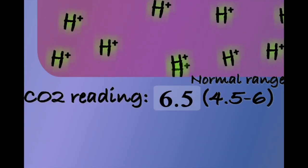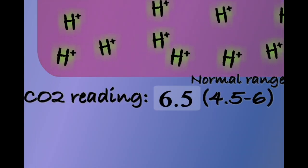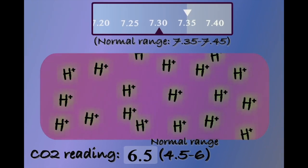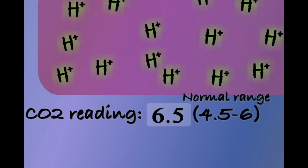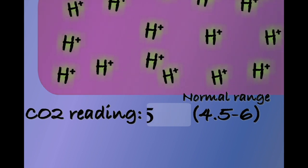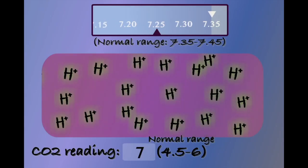CO2 greater than 6 kilopascals has the potential to push the pH of the blood below its optimum range. At this point, we will describe the ABG as representing a respiratory acidosis. If the CO2 continues to rise, then we will begin to see the symptoms associated with an acidosis.